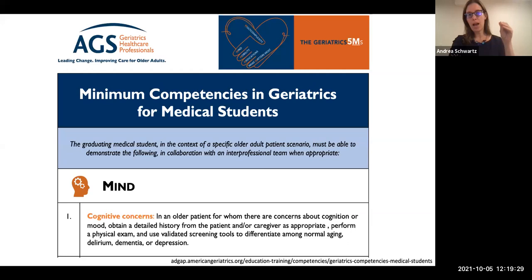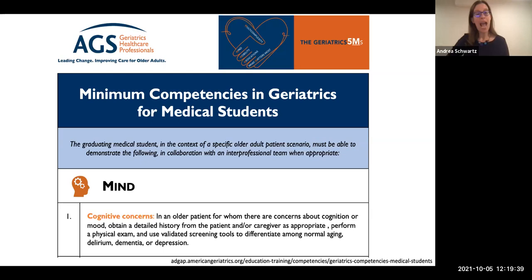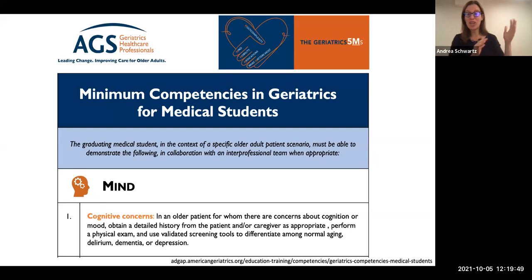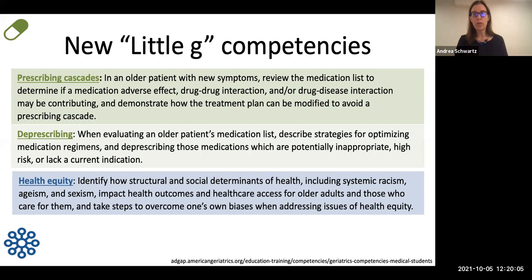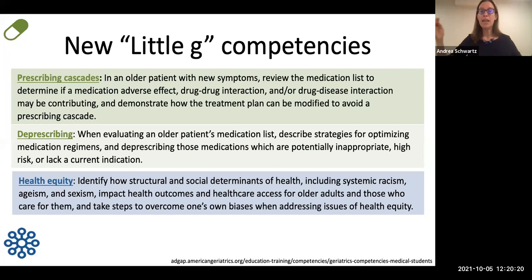The key about these competencies is that they are minimum competencies for graduating medical students — things that every doctor needs to know. Whether they meet someone like Jane as the grandmother of a child they're caring for as a pediatrician and need to recognize developing cognitive impairment, or they meet Jane in a preoperative appointment as an anesthesiologist needing to assess her risk of delirium. Every graduating medical student needs certain competencies within these five domains to care for people like Jane.